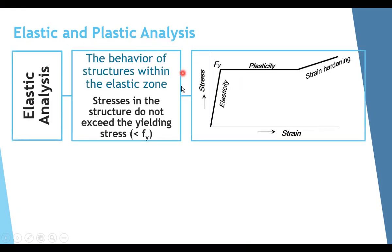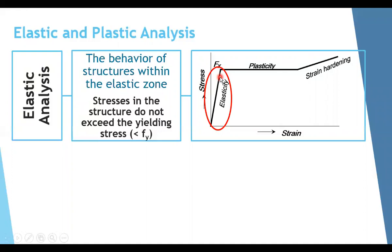In elastic analysis, the behavior of the structure should be within the elastic zone. If we look at the stress-strain curve of steel or many types of metals, at the beginning the relationship between stress and strain is linear or elastic, then you have a yield stress for the steel, and then it goes into the plastic or permanent deformations. In elastic analysis, we are in the area of elasticity, meaning stresses are less than F_yield — less than the yield strength of the steel reinforcement or steel structure.